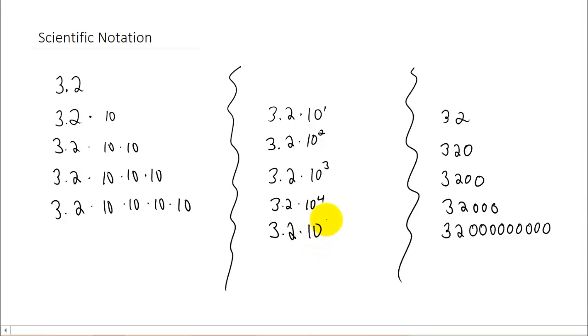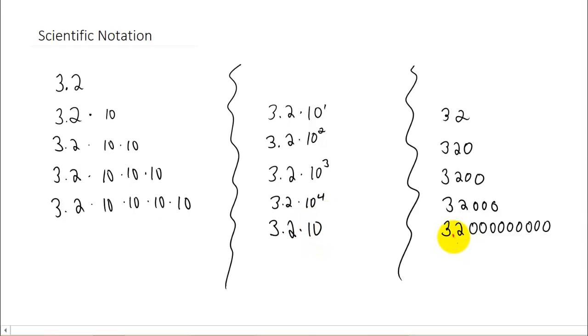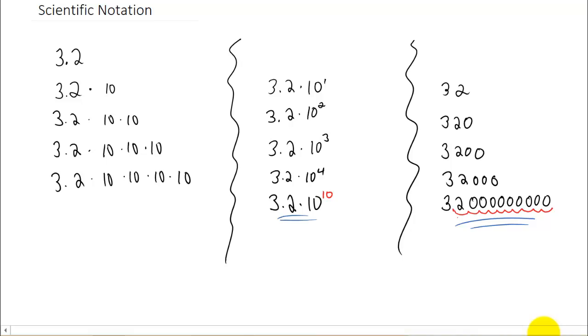So maybe we could write it like this: 3.2 times 10 to what power? We multiply 3.2 by 1, 2, 3, 4, 5, 6, 7, 8, 9, 10 factors of 10. So my argument, and a lot of scientists' argument, is that this number is a lot more difficult and cumbersome to write than this number right here. So when you're dealing with really big numbers, this number right here is preferred. And we call this way of writing numbers scientific notation.